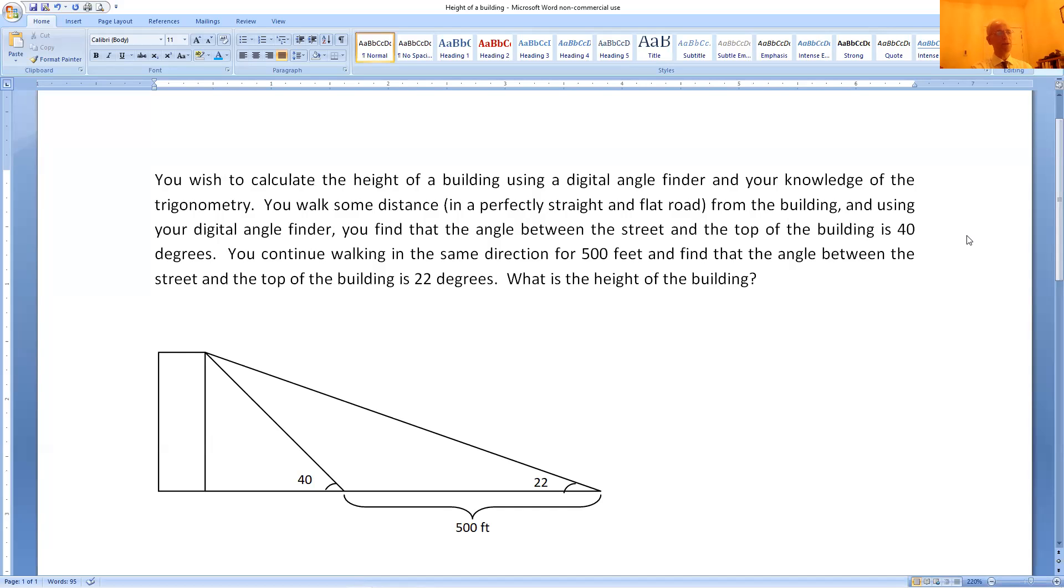You wish to calculate the height of a building using a digital angle finder and your knowledge of trigonometry. You walk from the building some distance on a perfectly straight and flat road, and you measure the angle between the top of the building and the surface of the street where you are standing. We don't know how far, so we can call it x. And you measure that angle to be 40 degrees.